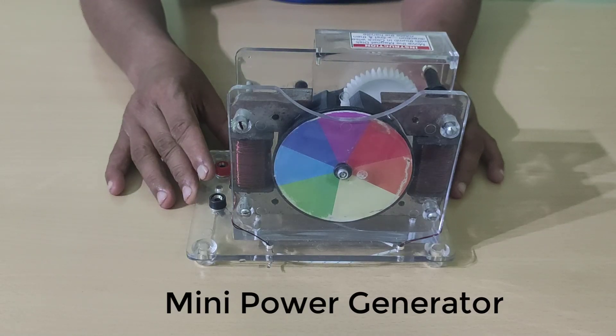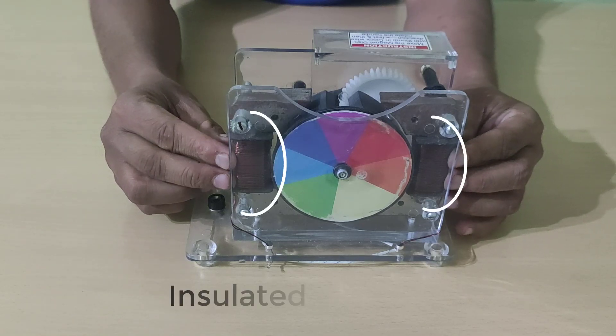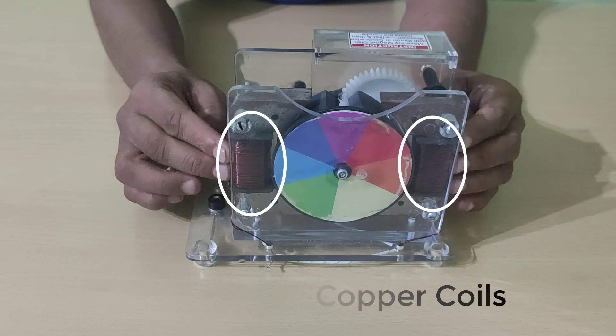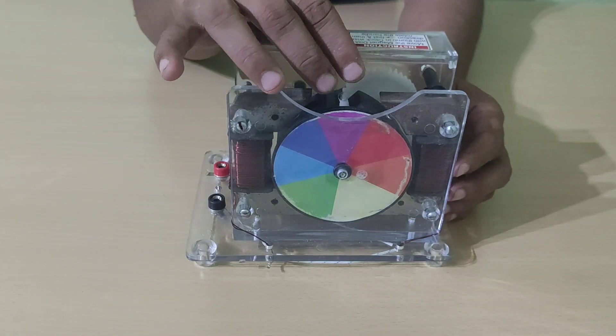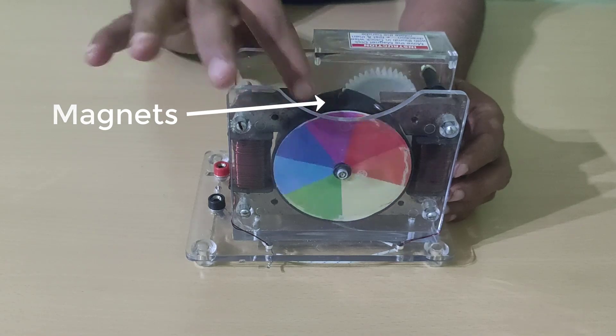This is a mini power generator. In this model we see insulated copper coils on both sides, and between them there is a magnet disc. This is a moving magnet disc.